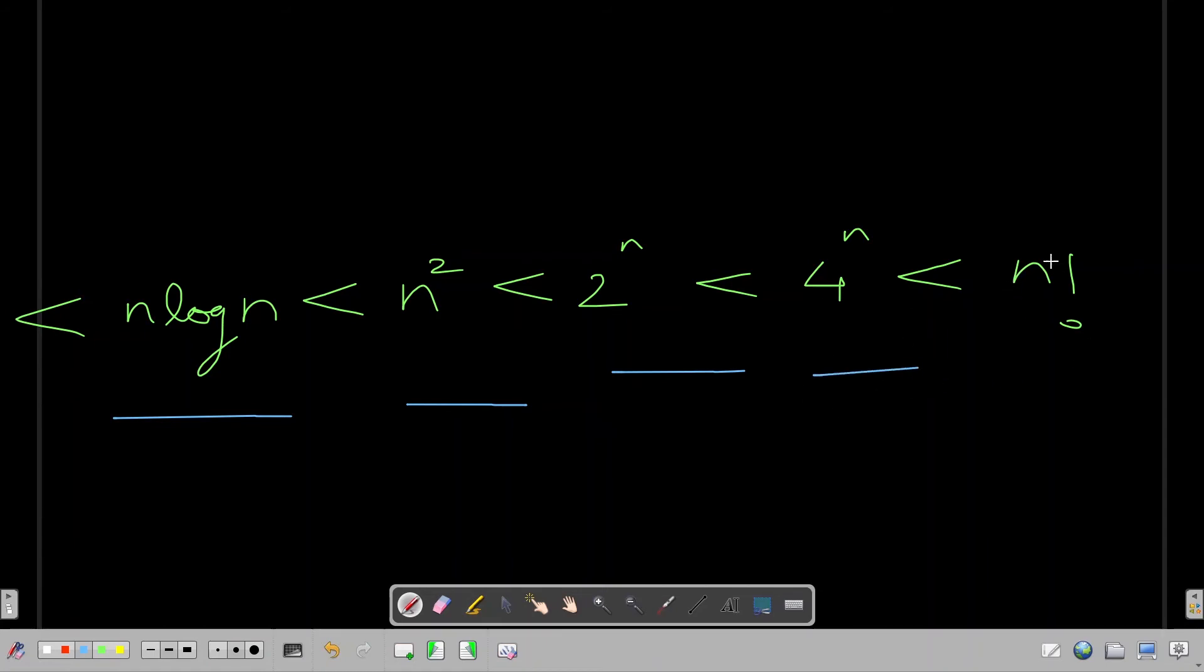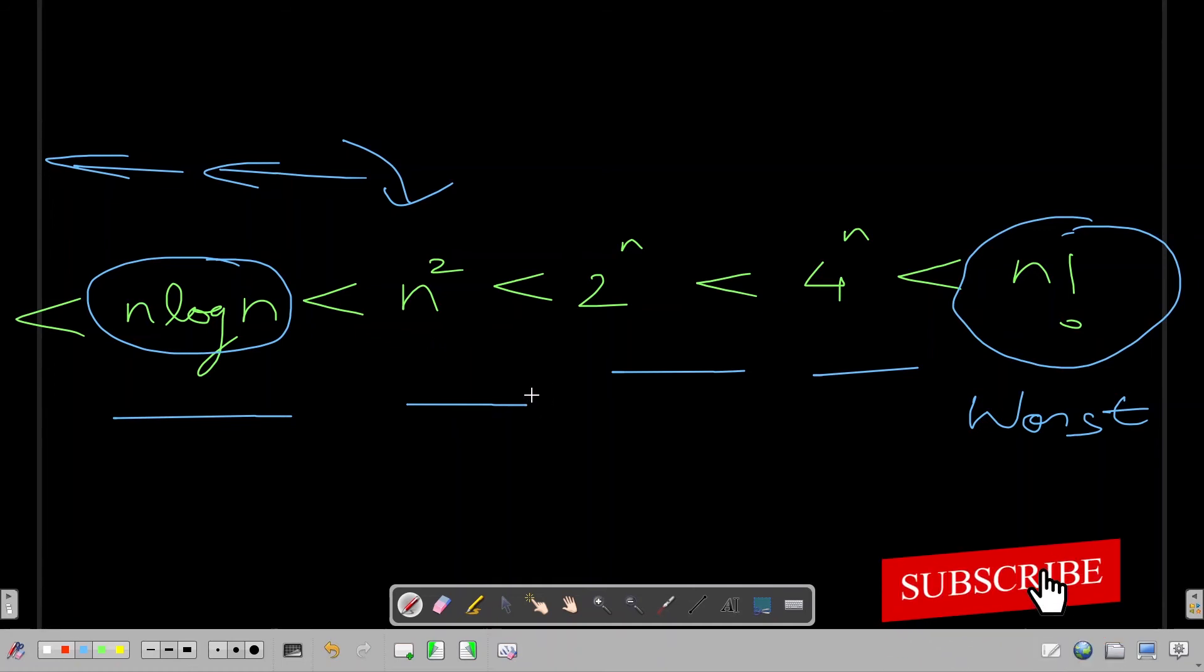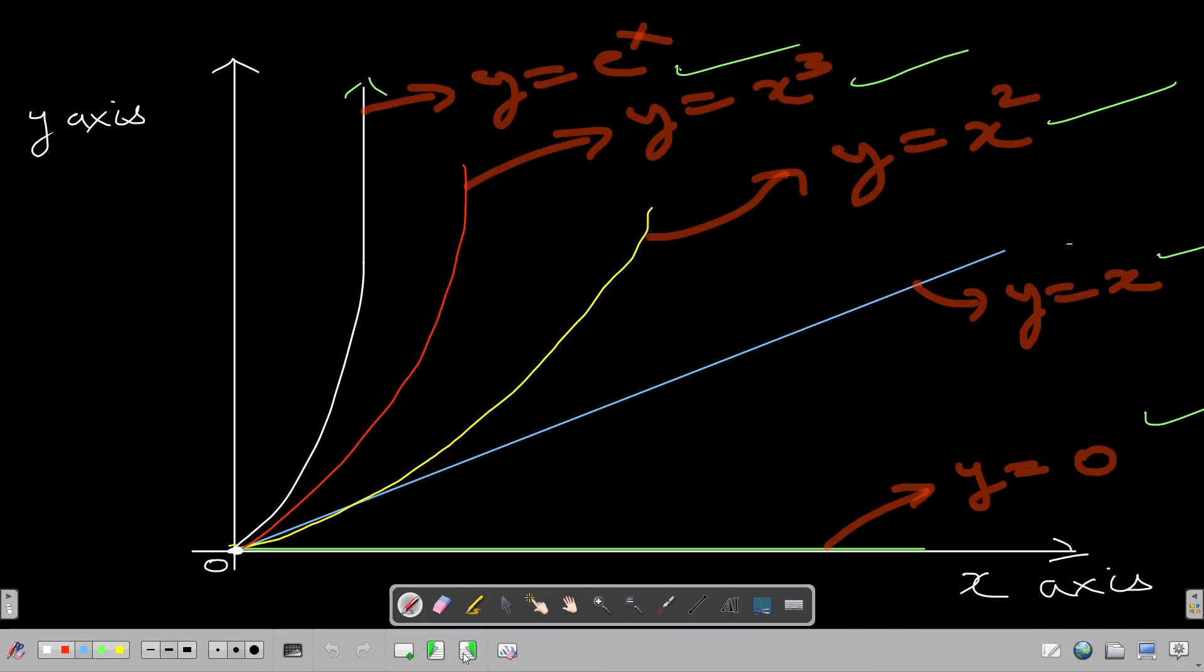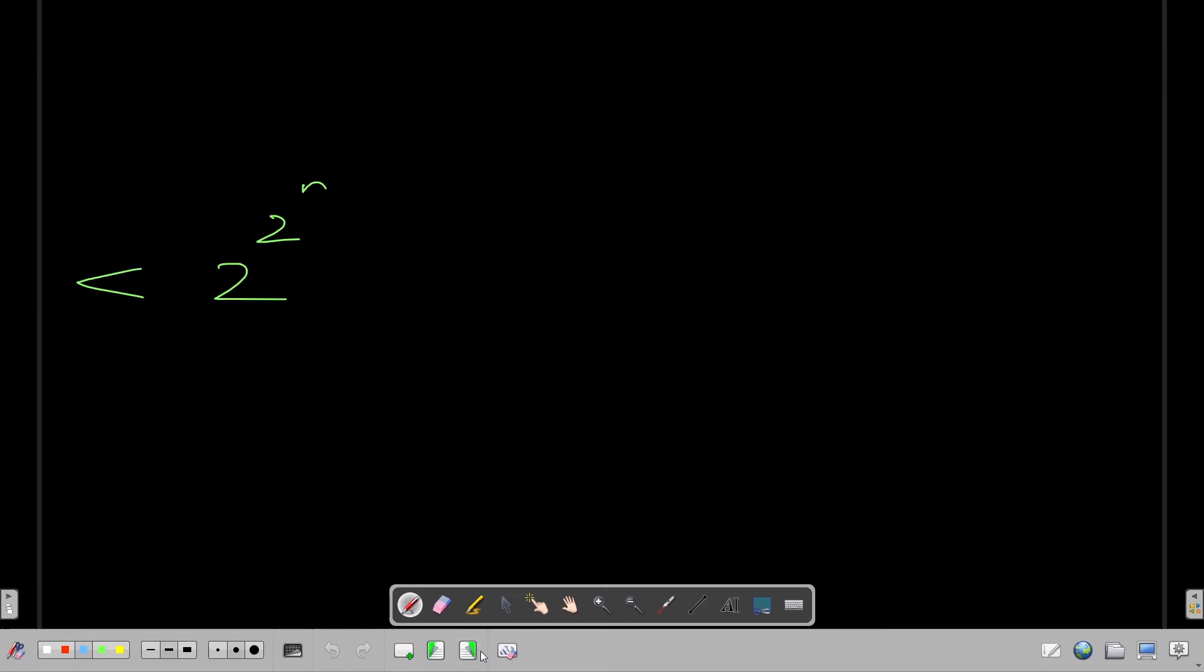Then comes O of 2 raised to power n, and the worst one is the factorial. This one is the worst time complexity. Ideally what you should try is, with the brute force, let's say if you got an algorithm of n square time complexity, you should try to move towards the left side, either make it n log n or n or constant whatever you can make. In every algorithm you should try to optimize it like this.